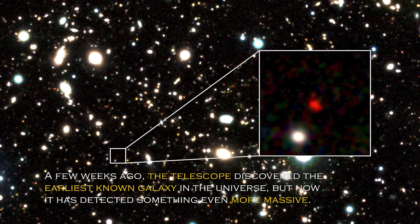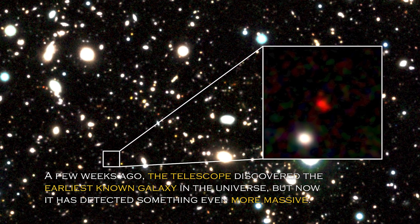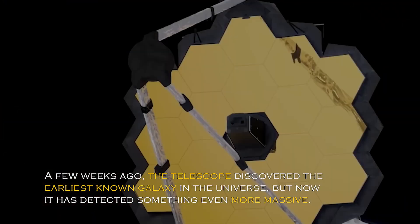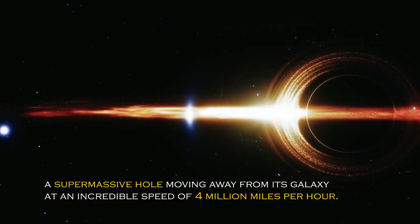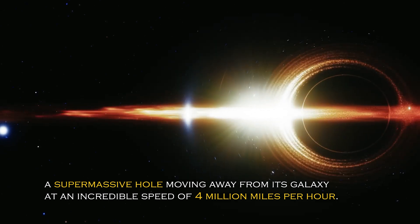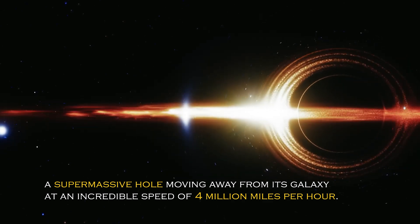A few weeks ago, the telescope discovered the earliest known galaxy in the universe, but now it has detected something even more massive – a supermassive hole moving away from its galaxy at an incredible speed of 4 million miles per hour.